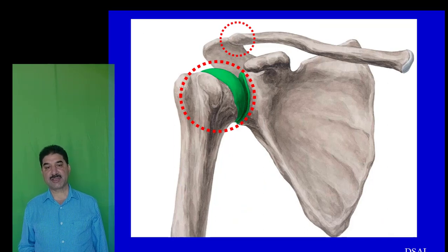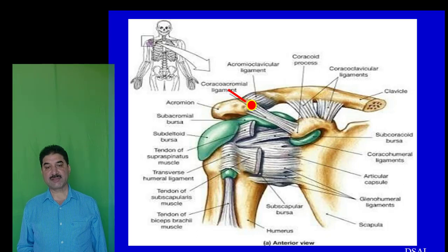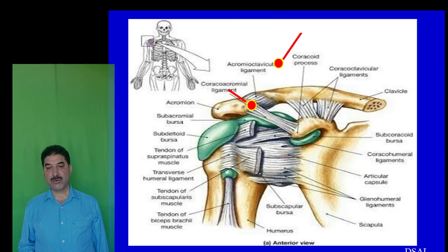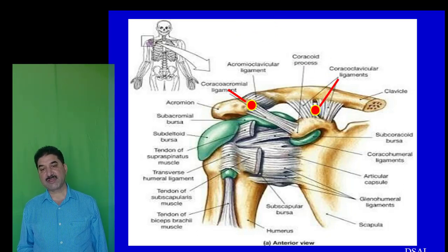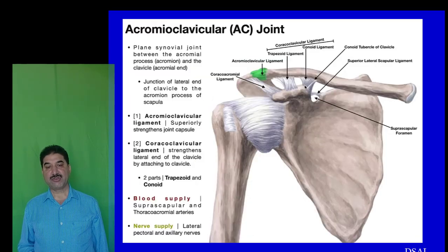Several ligaments are attached to the scapula. The coracoacromial ligament extends between the coracoid process and acromion, stabilizing the shoulder joint. The coracoclavicular ligament lies between the coracoid process and clavicle. The acromioclavicular ligament lies between the acromion and clavicle, stabilizing the acromioclavicular joint.